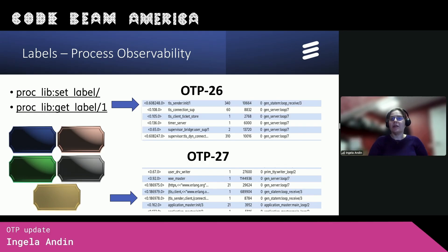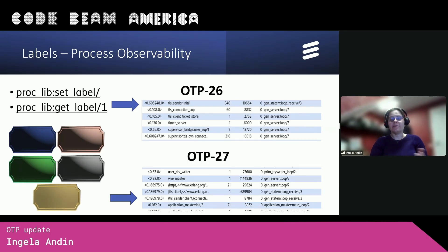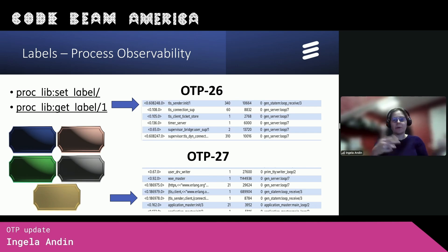But if we take a look at the bottom in OTP-27, where we have used the process labels, we can now see that the TLS sender is a client, and it's connected to www.erlang.org. We can also see it has a user process implementing HTTPS and not LDAP, for instance. So we are increasing the observability of our system in a really nice way. These labels will show up in crash reports and in Erlang crash dumps too. You can also have your own process labels associated with your own processes to increase observability even more.